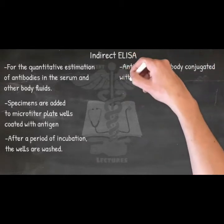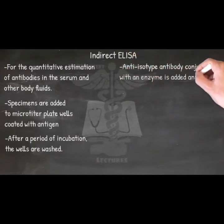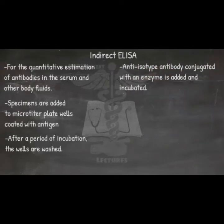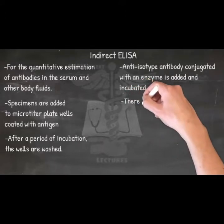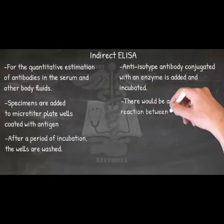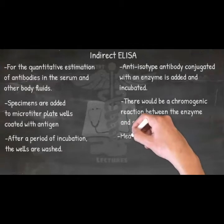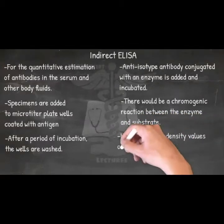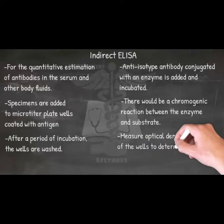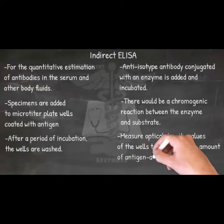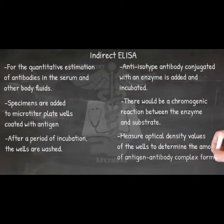Next, an anti-isotype antibody conjugated with an enzyme is added and incubated. After another washing step, a substrate for the enzyme is added. If there was complex formation in the initial step, the secondary anti-isotype antibody would have bound to the primary antibody and there would be a chromogenic reaction between the enzyme and substrate. By measuring the optical density values of the wells, after a stop solution has been added to arrest the chromogenic reaction, one can determine the amount of antigen-antibody complex formed in the first step.